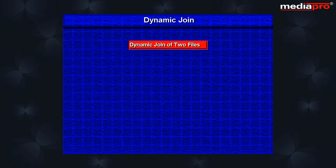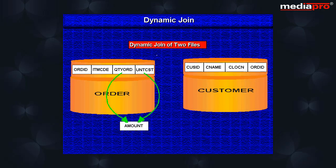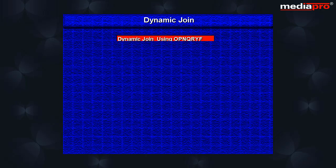Let us now look at the dynamic join of two files. An application requires the customer name and order ID from the customer file, and for each customer it requires the item code and quantity ordered from the order file and also the derived field cost that we just saw. Let us see how the open query file can be set up to implement a dynamic join.